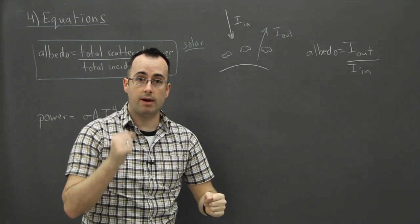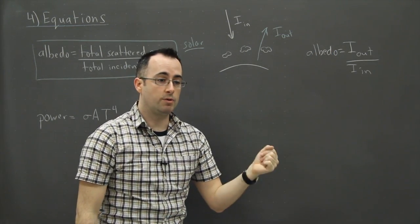So in this case, if you reflected all of it, then I out would be equal to I in and then you'd have one. So albedo values are found between zero and one, where zero is sort of darkest looking, one is the brightest looking.